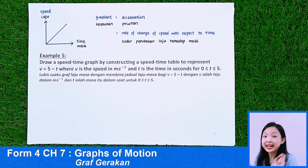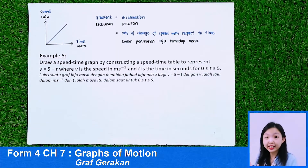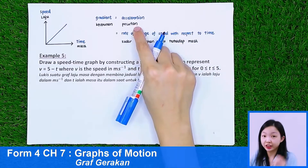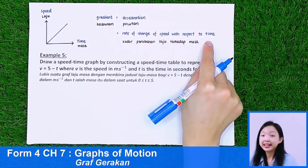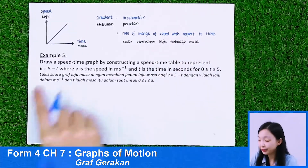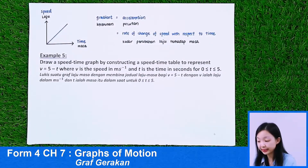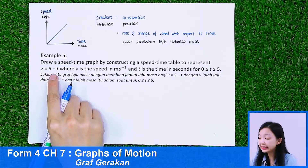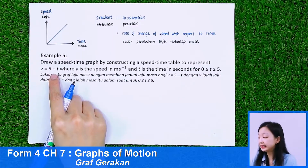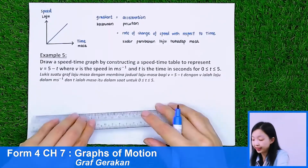Now let us go to the second type of graph in this chapter: the Speed-Time graph. The gradient of the speed-time graph represents the acceleration of the object — the rate of change of speed with respect to time. Let's go to Example 5.